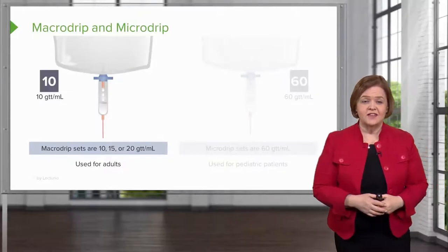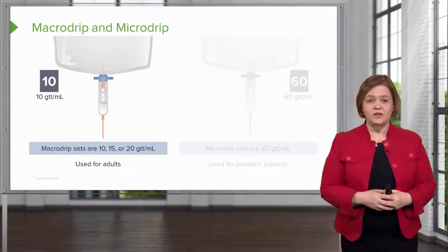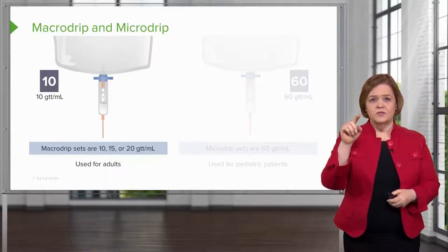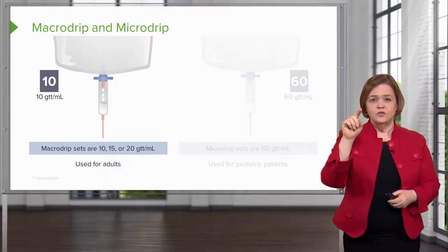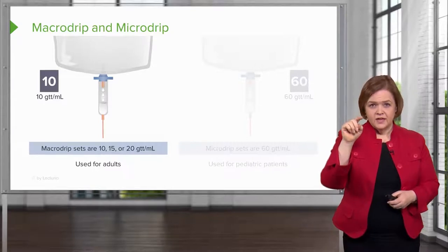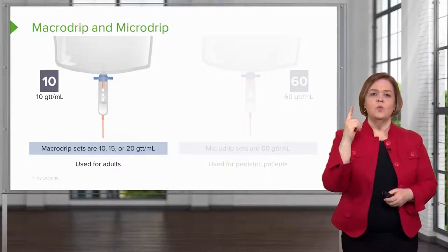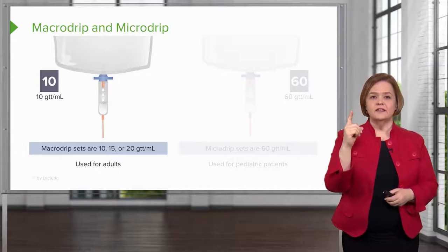That means when I'm counting how much volume the patient is getting and I'm setting the rate manually, I'd look at the drops and count one, two, three, four, five, six, seven, eight, nine, ten — that would equal one milliliter.